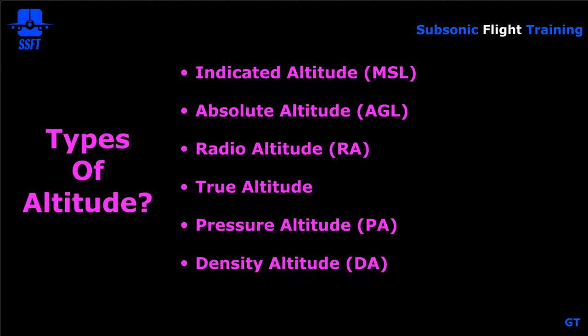Density altitude is the density of the air corrected for non-standard temperature, pressure, and humidity. As we learned early in aviation, if you're at a hot, humid, high-elevation airport, the density altitude will be much higher than the actual field elevation. For example, if you're in Denver on a hot, humid day and the elevation is 5,000 feet, the actual density altitude may be 8, 9, or 10,000 feet, and the aircraft would respond as if it's at that higher density altitude.